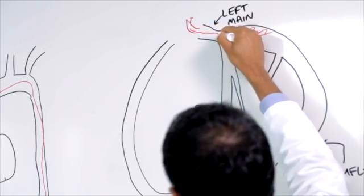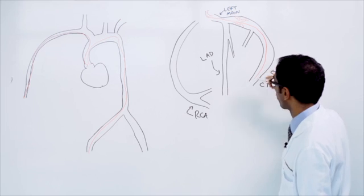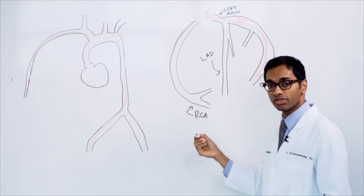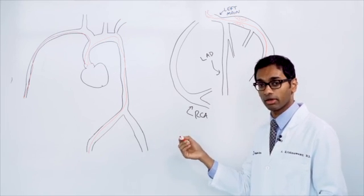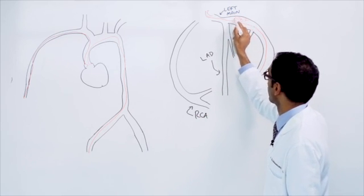We thread a wire that goes in from the leg, comes up to the heart, and goes down the coronary artery. We use this wire as a train track for us to then send a balloon first to open up this narrowing a bit.